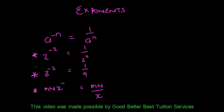If I look at the next example, I have 2 to the power negative 2 — how do I write that positively? I write it as 1 over 2 to the power 2, and 1 over 2 squared is 1 over 4. Next, 3 to the power negative 2: we first write it as 1 over 3 to the power 2, which gives us 1 over 9.